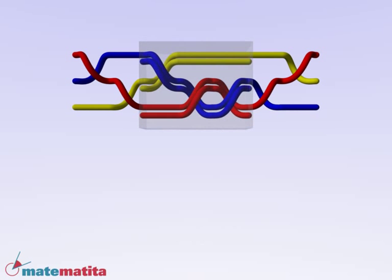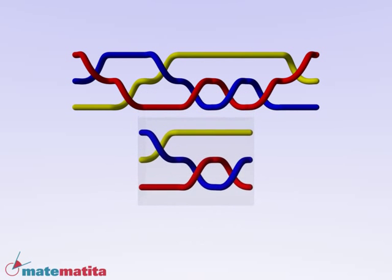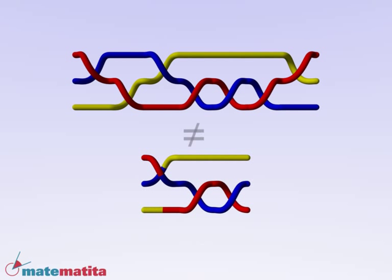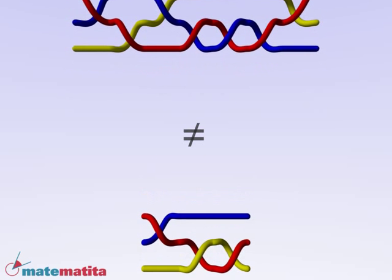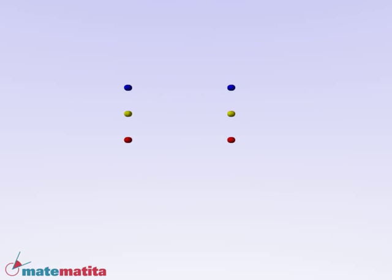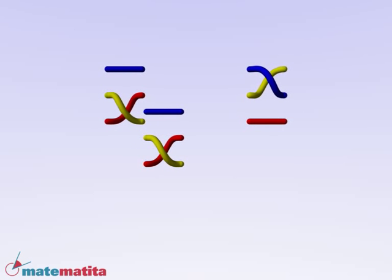On the contrary, two braids can be different and still be conjugated. Here is a simpler example. Two generators of the braid group are surely different braids. But look, they are conjugated.